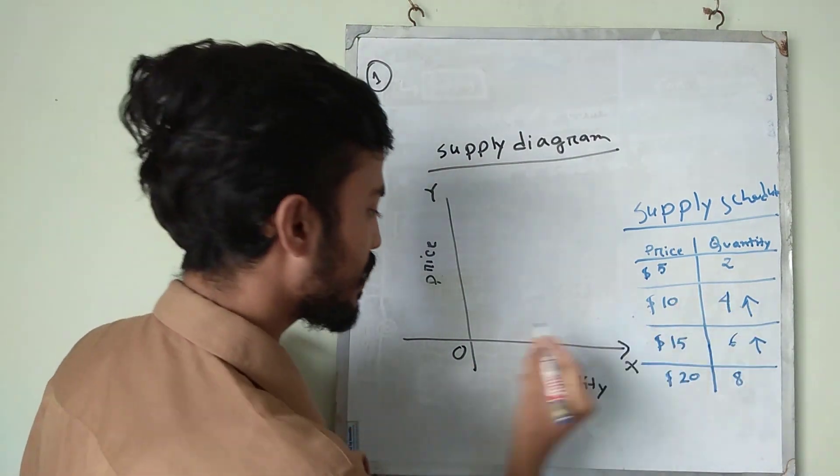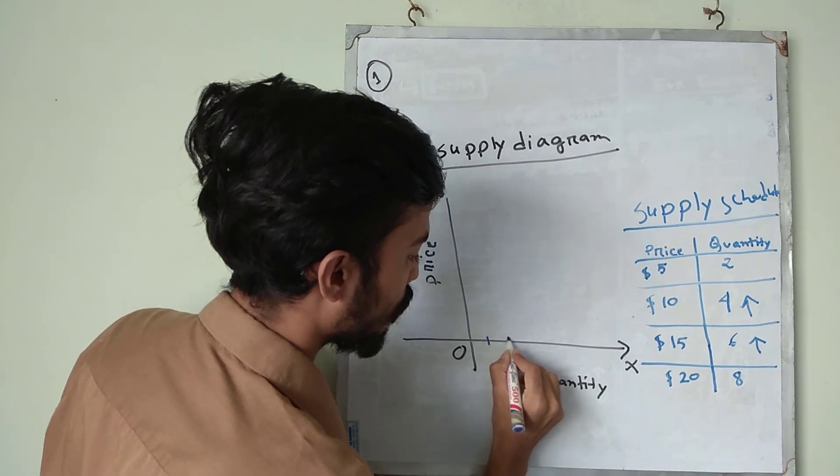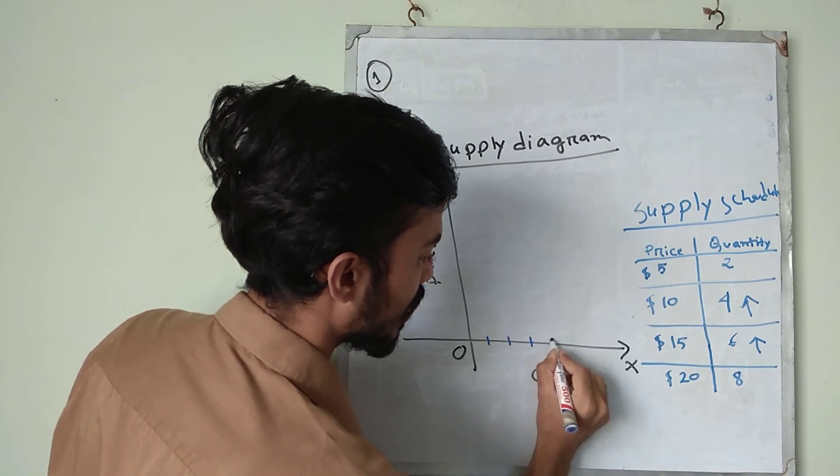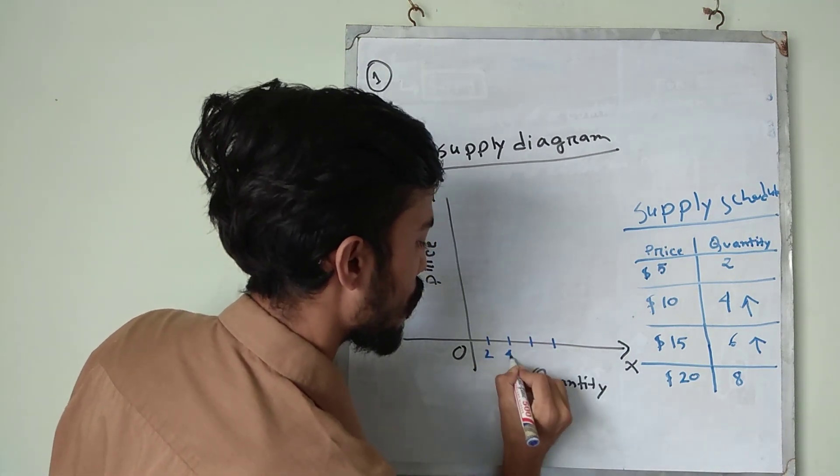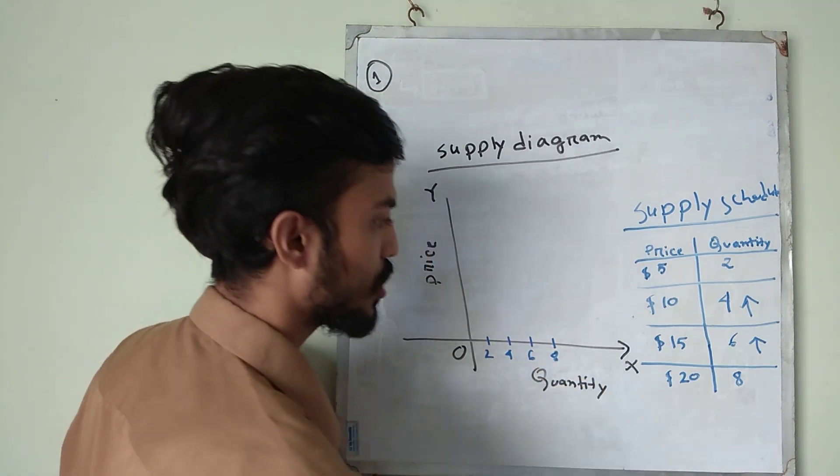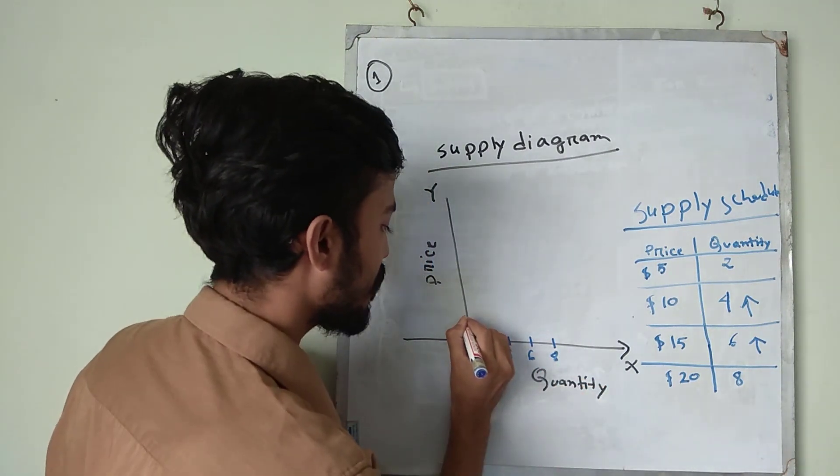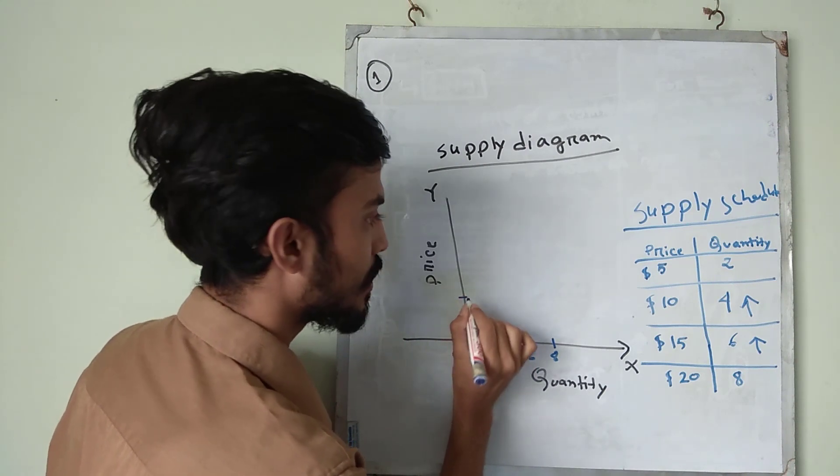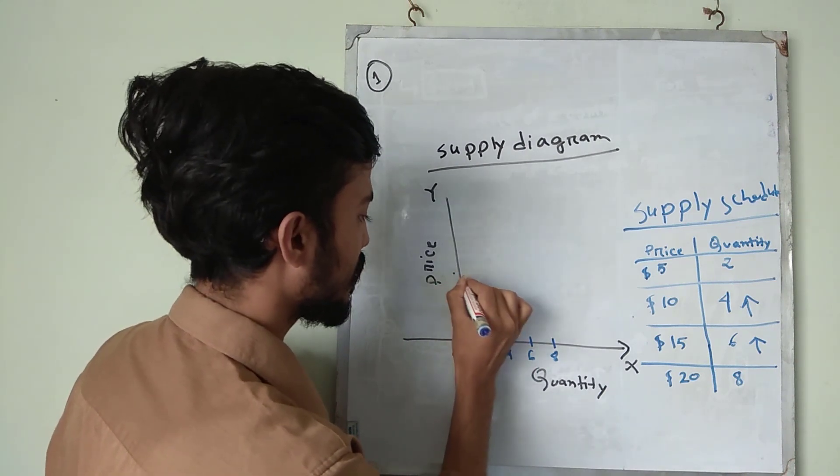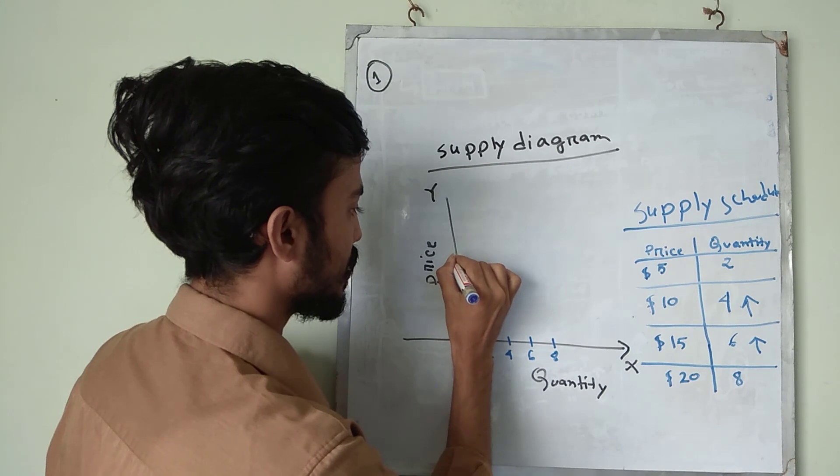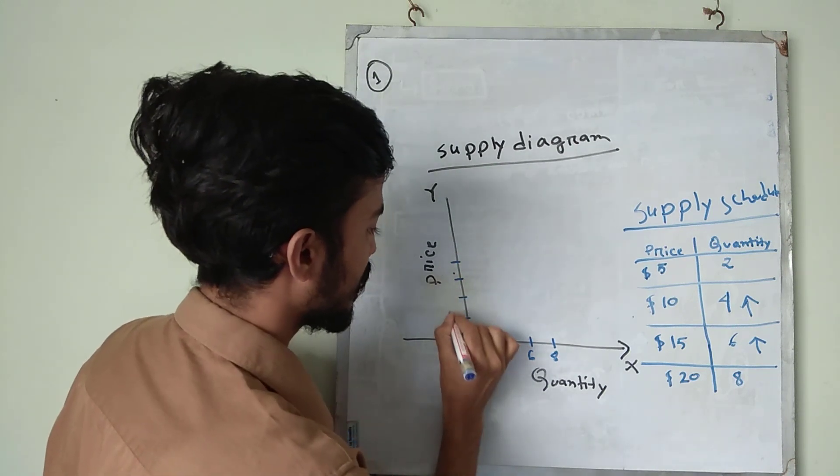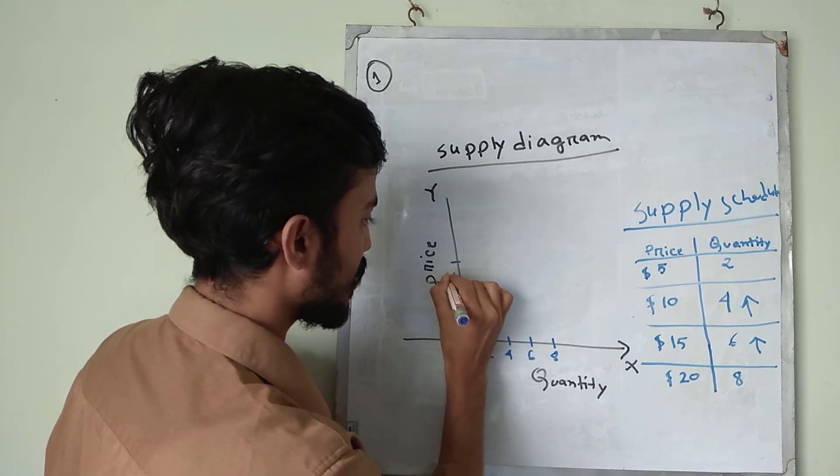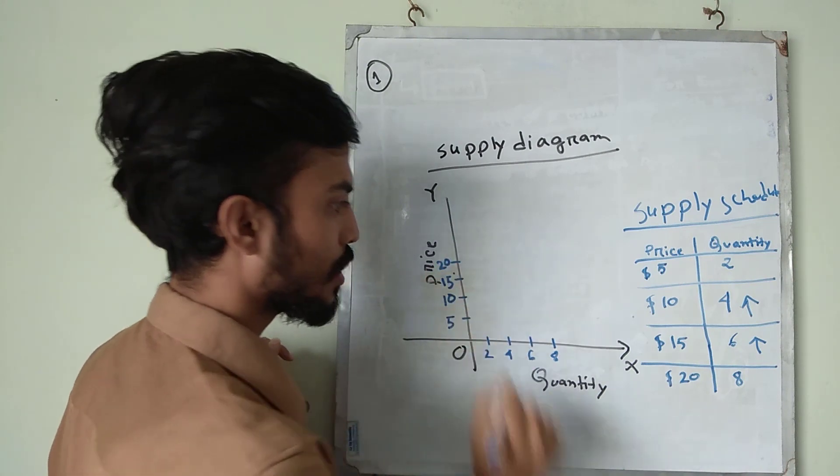Quantity 2, 4, 6, 8. And price is 5 and 10, 15. Let's say here and 20. 5, 10, 15 and 20.